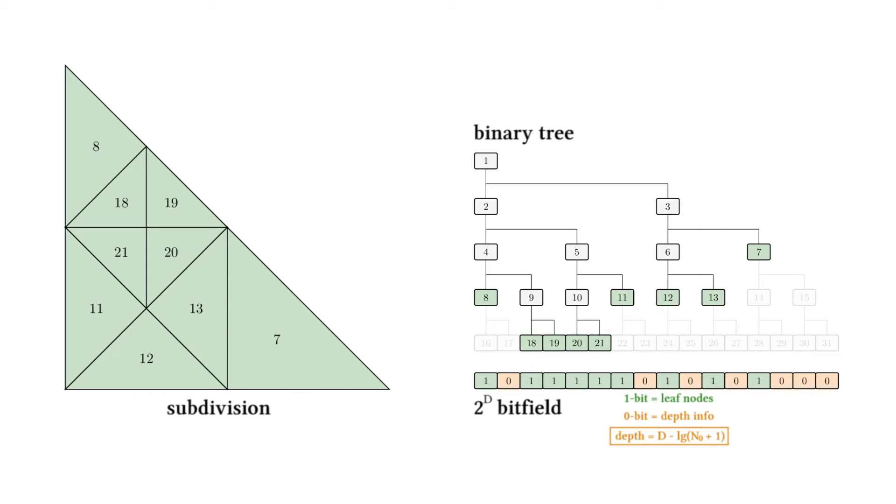What is also interesting is that the bit field translates subdivision steps into simple bitwise operations. Specifically, node decimation translates into setting bits to 0, and node subdivision translates into setting bits to 1.